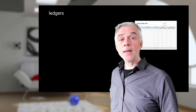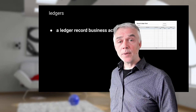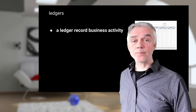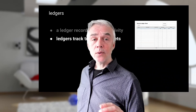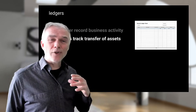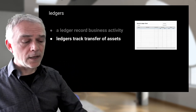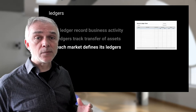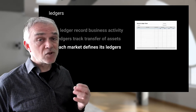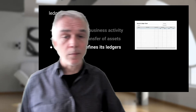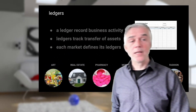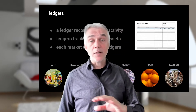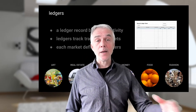When talking about ledgers, we see that companies and institutions use ledgers to record business activity. You can use ledgers to track the transfer of assets. Each market defines its own ledgers because each market has specific properties — the market for art, real estate, pharmacy, money, food, fashion. There are many different markets and many different types of ledgers.